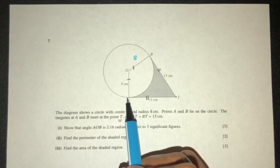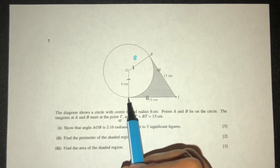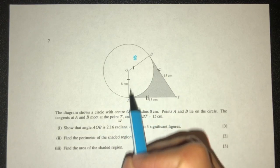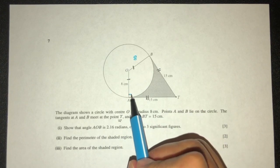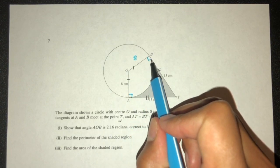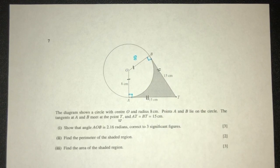So what do we know? If the tangent meets the center, it will mean that this has to be 90 and this has to be 90. This is a theorem you have to know. I think we have learned this in circle theorem in O-level as well.